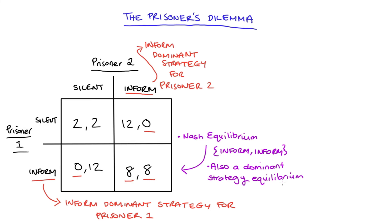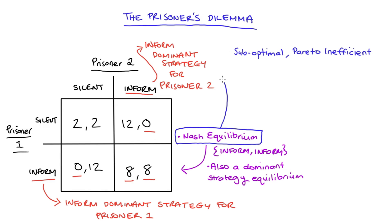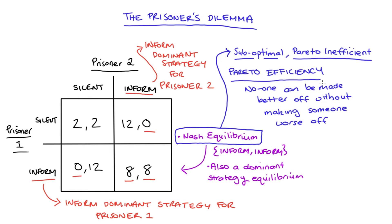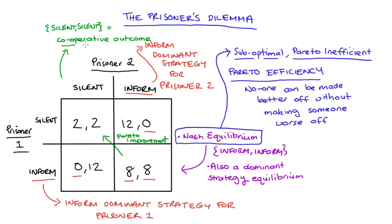In our game we have one unique Nash equilibrium: both prisoners inform the police on each other's involvement in the worst crime. This is also a dominant strategy equilibrium — not just the intersection of two best responses but of dominant strategies. The equilibrium outcome is not great for our players — it's what we call Pareto suboptimal or Pareto inefficient. A Pareto efficient outcome is one where no one can become better off without making someone else worse off. The Nash equilibrium is Pareto inefficient because we can make both prisoners better off — and neither worse off — if they both stay silent, which is a Pareto improvement.